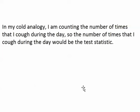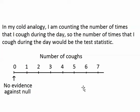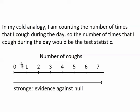In my cold analogy, my test statistic would just be the number of times I cough during the day. If I cough zero times and my test statistic is zero, there is no evidence against the null. This outcome would perfectly line up with the possibility that I am healthy and don't have a cold. But higher outcomes show more and more evidence against the null — more evidence that the null is wrong and that I do have a cold. So if I cough a really large number of times, I have really strong evidence against the null hypothesis.